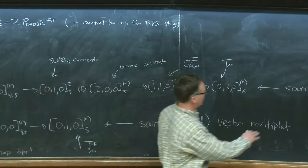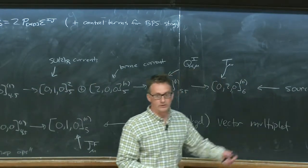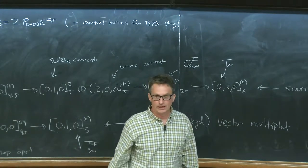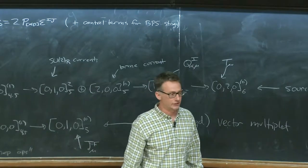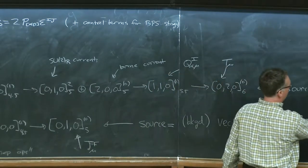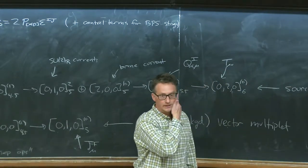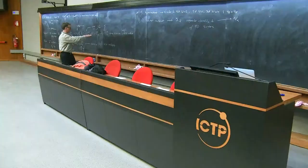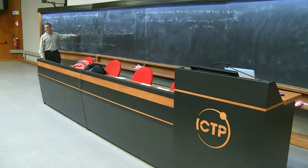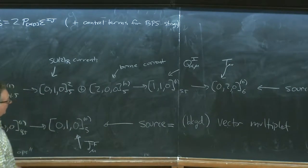It's often convenient to turn on sources for operators, just like in introductory field theory where you turn on sources and write down an effective action. The sources for these operators — the stress tensor, SU(2)_R currents, etc. — form the background supergravity multiplet. The metric couples to the stress tensor, there are SU(2)_R gauge fields, and so on. I'm not discussing supergravity as a dynamical theory, but rather as backgrounds for these operators.